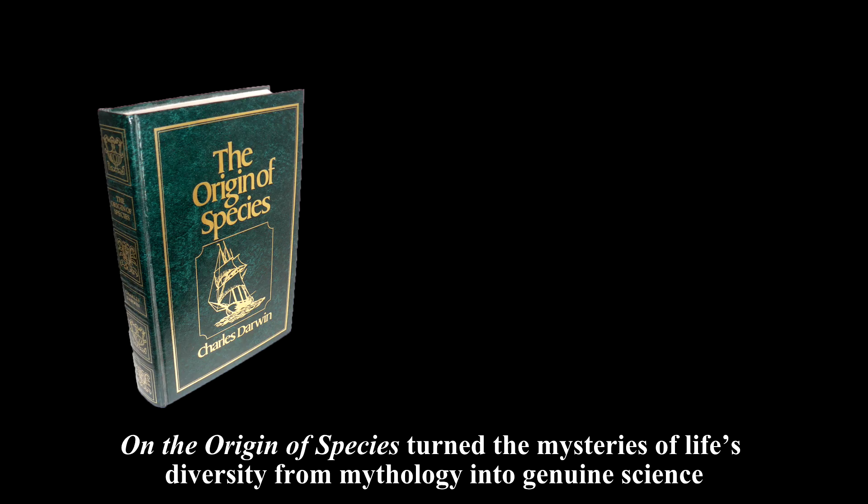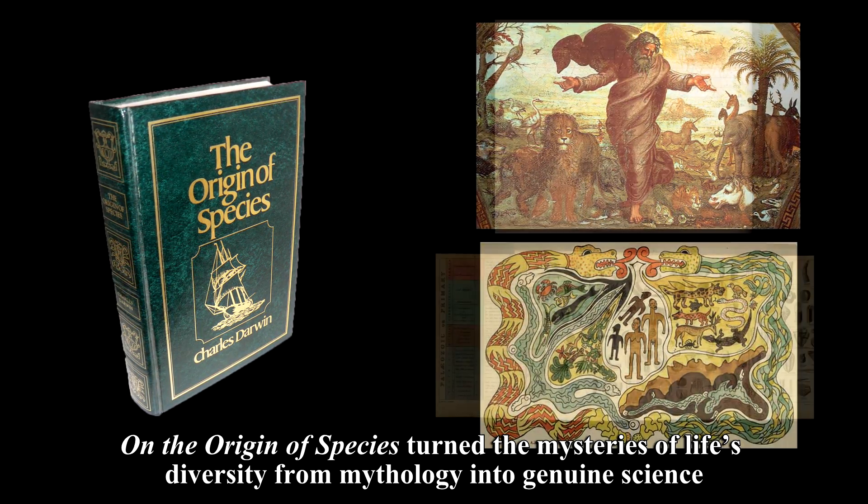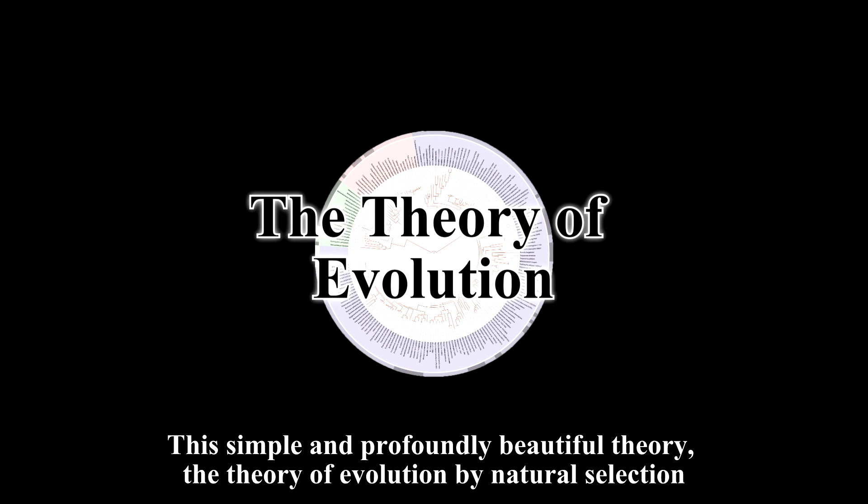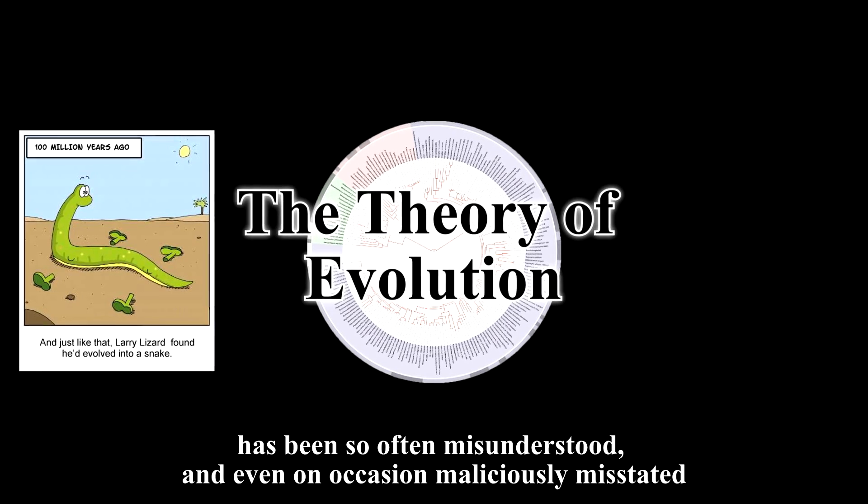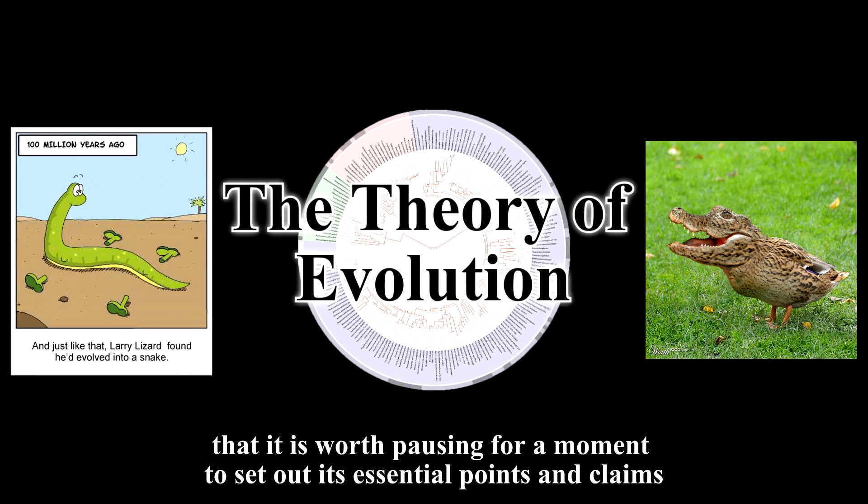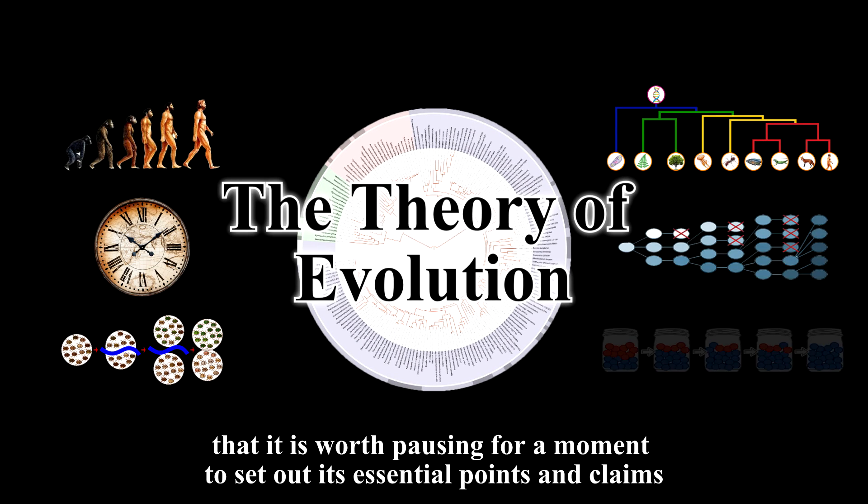On the Origin of Species turned the mysteries of life's diversity from mythology into genuine science. So what is Darwinism? This simple and profoundly beautiful theory, the theory of evolution by natural selection, has been so often misunderstood and even on occasion maliciously misstated, that it is worth pausing for a moment to set out its essential points and claims.